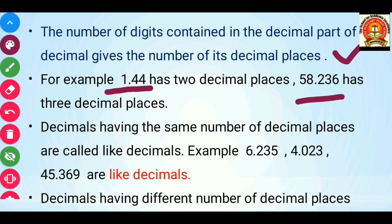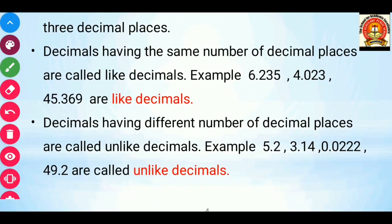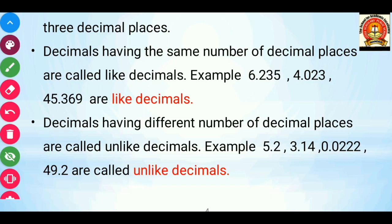So we can have 2 categories here: like decimals and unlike decimals. As the name suggests, like decimals are decimals having the same number of decimal places. For example, 6.235, 4.023, and 45.369 — all three contain 3 decimal places, so they are called like decimals. Whereas unlike decimals have a different number of decimal places — for instance, having 1, 2, 4, and 1 decimal places respectively — so we call them unlike decimals.